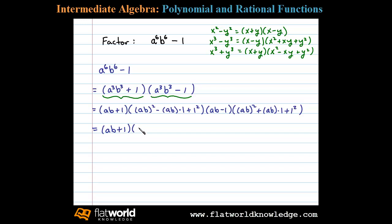Times a b minus one times a b squared which is a squared b squared plus a b plus one. And that's the complete factorization of a to the six b to the six minus one.